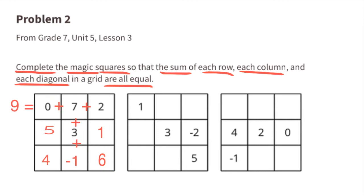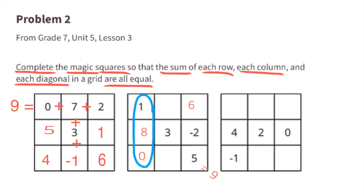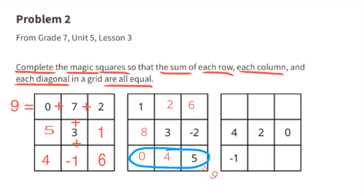Moving to the next grid: they've given us 1, 3, and 5, which also totals 9, so every row, column, and diagonal needs to total 9. Right-hand vertical column: 6 minus 2 is 4, and 4 plus 5 equals 9. Left column: 1 plus 8 plus 0 equals 9. Across the top: 1 plus 2 plus 6 equals 9. Vertically: 2 plus 3 plus 4 equals 9. Diagonally: 0 plus 3 plus 6 equals 9.